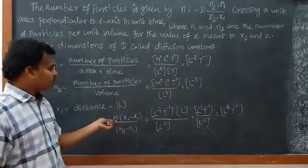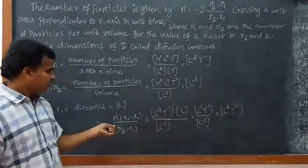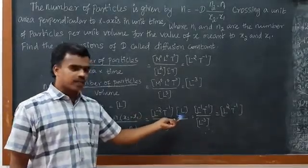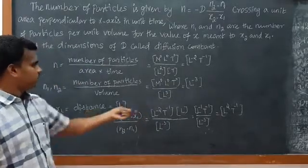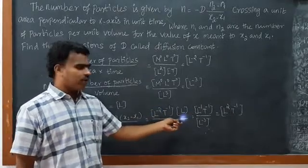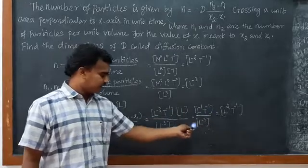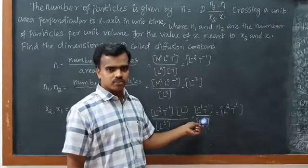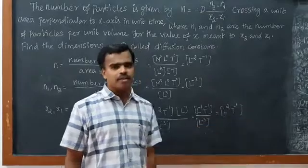Therefore we can write n, what we found, L to the power minus 2, T to the power minus 1. And x1, x2 is distance, so we write L. And what is n2? We found L to the power minus 3. So we have L to the power minus 2, here we have L. Therefore it becomes L to the power minus 1, T to the power minus 1. The denominator we have L to the power minus 3. This denominator goes to numerator then it becomes plus. Therefore L to the power minus 1 plus 3 gives L to the power 2, T to the power minus 1.